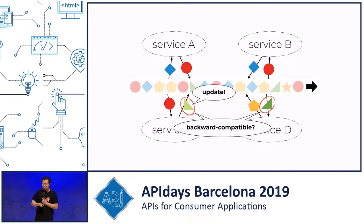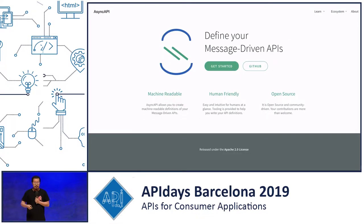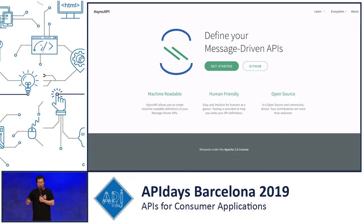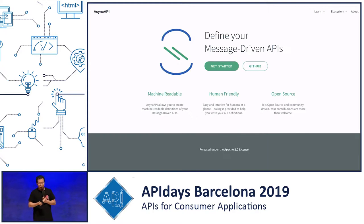This is where things like documentation, contract testing, and using something like Async API — which Franz just mentioned this morning and has a new version, Async API 2.0, just published — become very important.